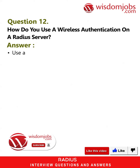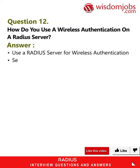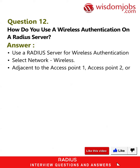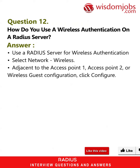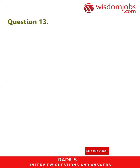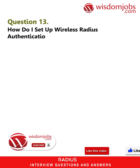Question 12: How do you use wireless authentication on a RADIUS server? To use a RADIUS server for wireless authentication, select Network > Wireless adjacent to Access Point 1, Access Point 2, or Wireless Guest configuration, then click Configure and select the Wireless tab.